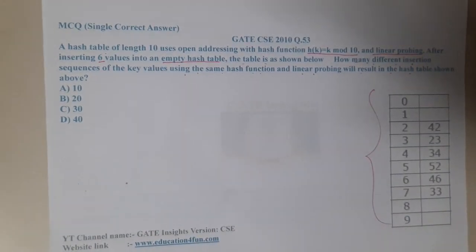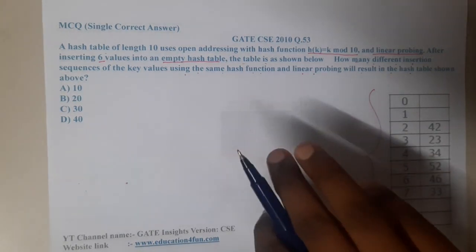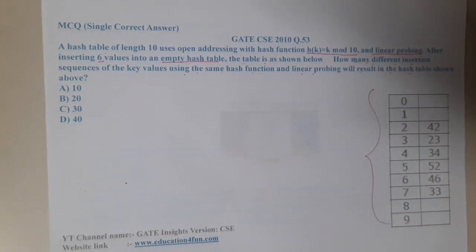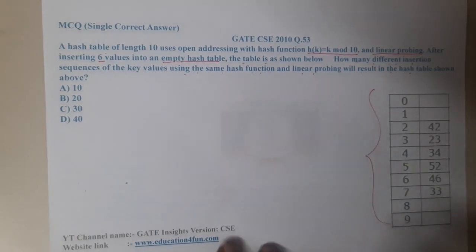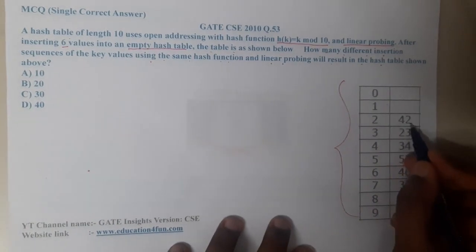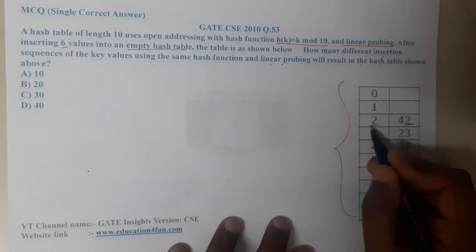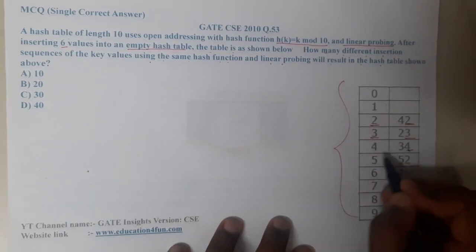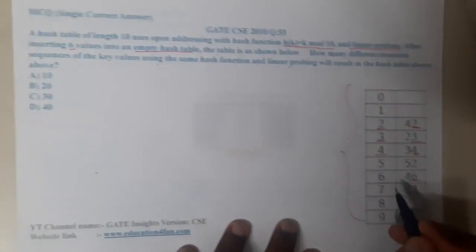This question is a bit different. If you observe carefully, he is asking how many different sequences can be found. So let us understand the logic here. How many values are exactly at their locations? 22 is matching, 33 is matching, 44 is matching, and 66 is matching.